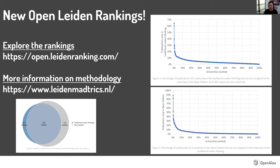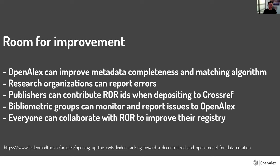One of the things I really appreciated about their blog posts is that they ended with practical tips for room for improvement. These are slightly paraphrased from their blog posts, but I think they're really important to focus on, and I'm going to use these as a guide for the remainder of the talk. First, they said to us: OpenAlex, you can improve metadata completeness and the ability of our algorithm to match affiliation metadata to institutions. That's something we're taking on and have been continuing to work with them on.